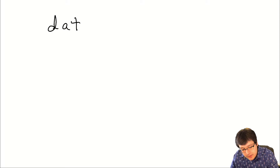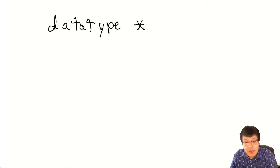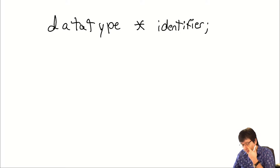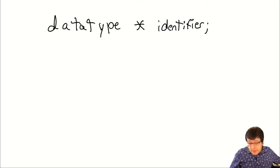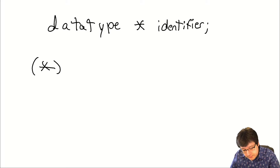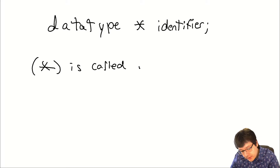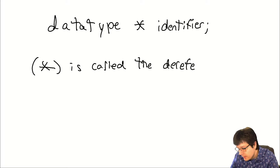Let's talk about what a pointer is. First I want to tell you the definition and then explain what it really means, starting with syntax — how do you declare a pointer. A pointer is just a type of variable. There are integer variables, double variables, floats, chars, and there are also pointer variables. The syntax for declaring a pointer is: the data type, then the asterisk which stands for pointer, then an identifier, then a semicolon. That asterisk is called the de-referencing operator, also known as the indirect operator.